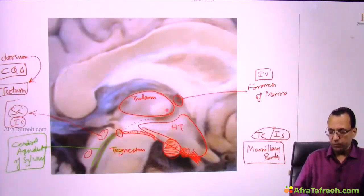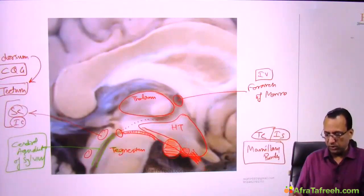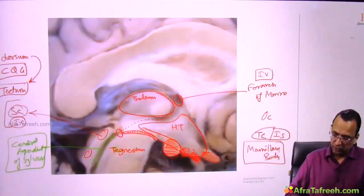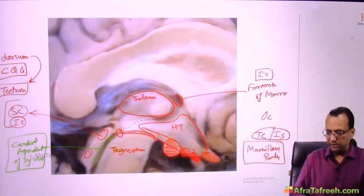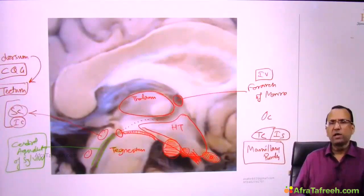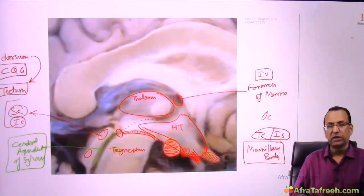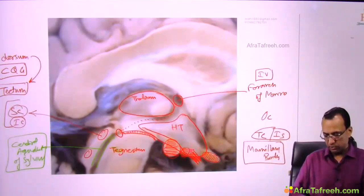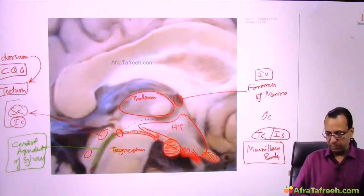The posterior pituitary — neurohypophysis — is a downward extension of the diencephalon part of the brain, attaching via the infundibular stalk, also called the pituitary stalk. This is the optic chiasma — the optic nerve is the nerve of the diencephalon. So the structures at the floor of the third ventricle from anterior to posterior are: optic chiasma, infundibular stalk, tuber cinereum, mammillary body, and tegmentum part of the midbrain.